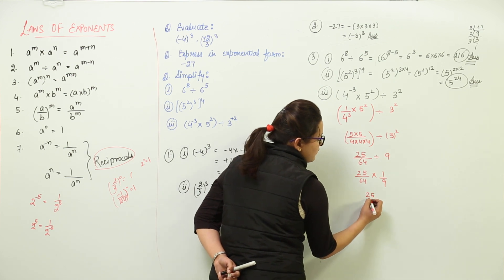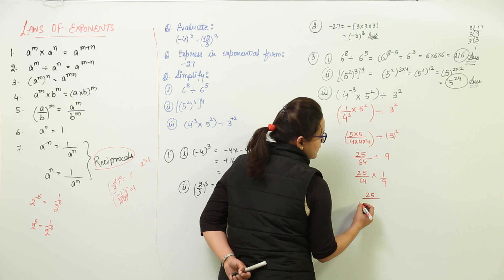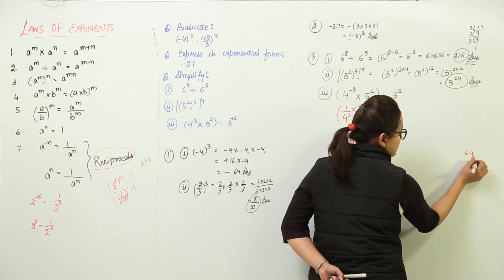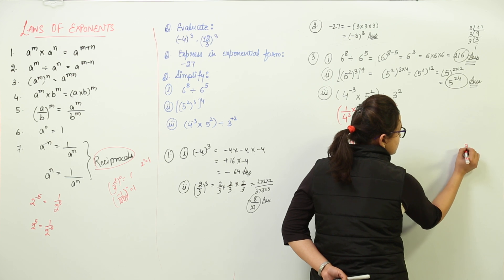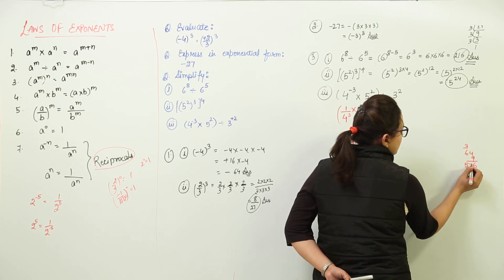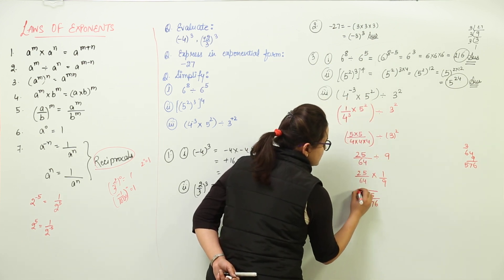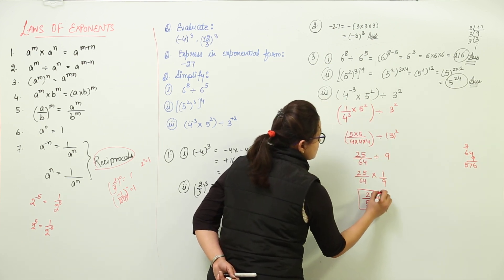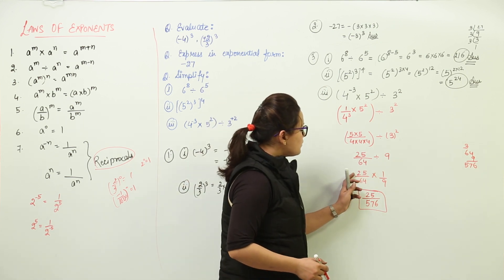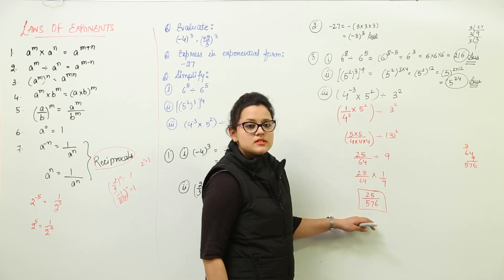Now we divide: 25 upon 64 multiplied with 1 upon 9, because 9 becomes the reciprocal. So we get 25 divided by 64 into 9. 64 into 9 gives us 576. So the answer is 25 upon 576 — here 25 into 1 becomes 25, and 64 into 9 becomes 576.